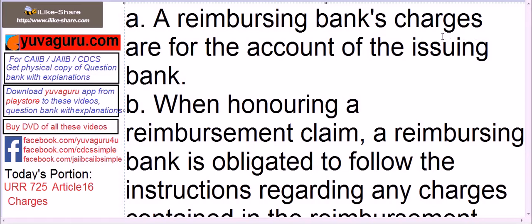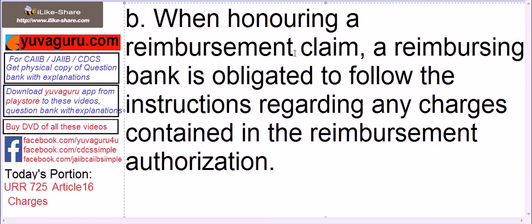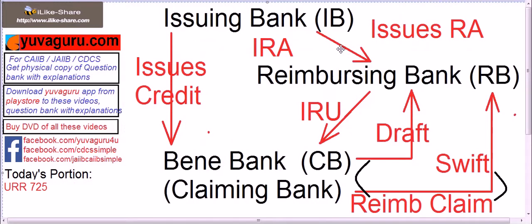The reimbursing bank acts on the instructions of the issuing bank, so any bank that instructs somebody is responsible for the charges. Clause B: when honoring a reimbursement claim, a reimbursing bank is obligated to follow the instructions regarding any charges contained in the reimbursement authorization (RA). Whatever is written in the RA by the issuing bank, the reimbursing bank must follow those instructions while settling claims.